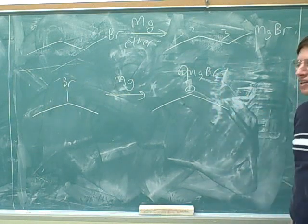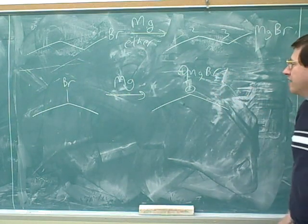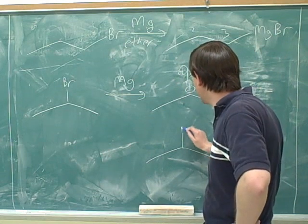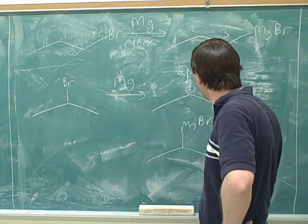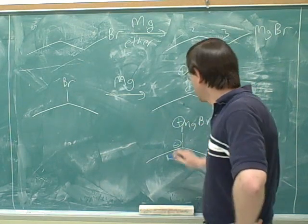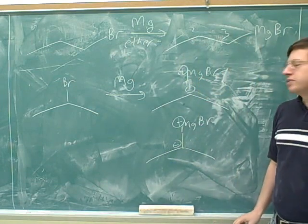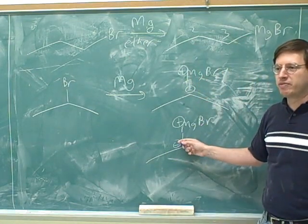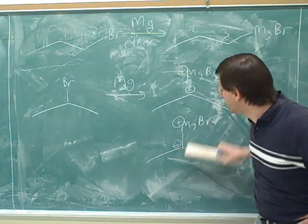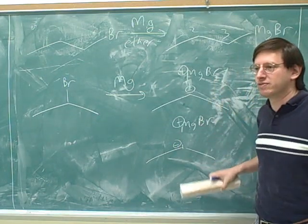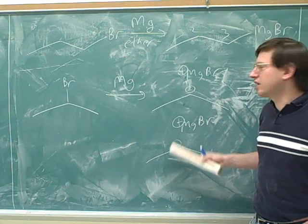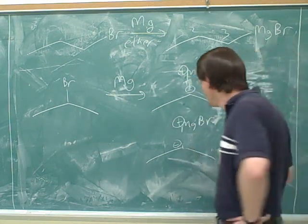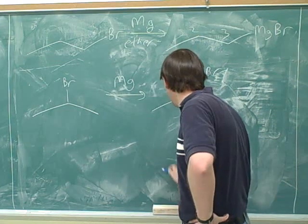Some other mistakes people might make: you can't show both the covalent and ionic bond at the same time. If we're going to put in the ionic bond, we must erase the covalent bond. These are alternatives to each other - when you put in the ionic bond, you have to erase the covalent bond that was there before.